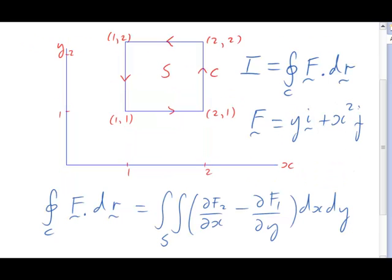Here, f2 is the second component of F, that's x squared, and f1 is the first component, that's y.